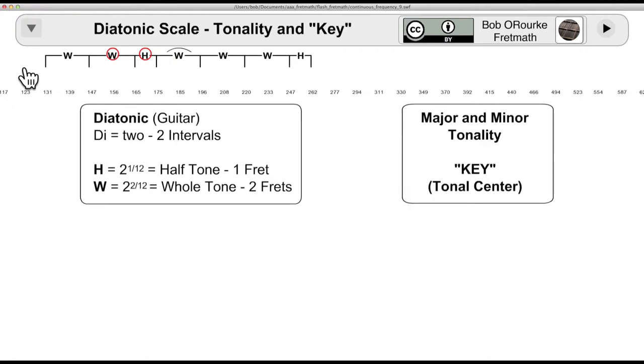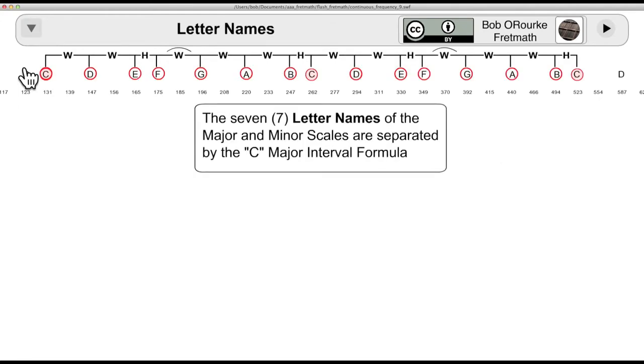The guitar uses two tones, the half tone, 2 to the 1/12th, and the whole tone, 2 to the 2/12ths, to make the major scale, which gives us the tonality or key center, a gravitation towards the key center. The seven letter names of the musical alphabet are separated by the C major interval formula.